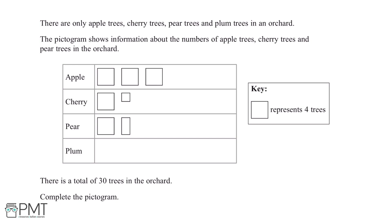In the pictogram we have been given a key, and this is that one large square represents four trees. We have been told in the question that this pictogram already shows the information about the number of apple, cherry and pear trees. So we will only need to fill in the plum trees.